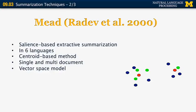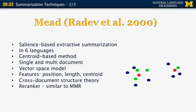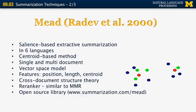This method works for both single and multi-document summarization. MEAD uses additional features beyond centroid: position (whether the sentence is the first in the document), length (short sentences are excluded), and a technique called cross-document structure theory. MEAD is one of the most commonly used methods for extractive summarization, and it includes an open-source library downloadable from www.summarization.com.